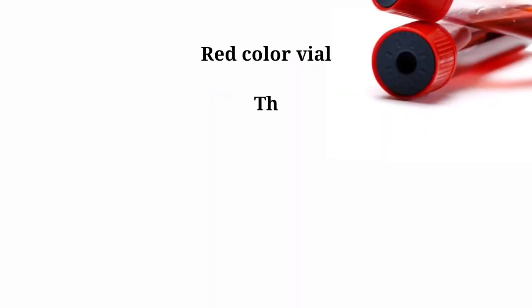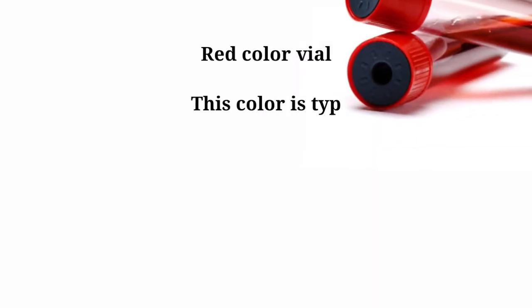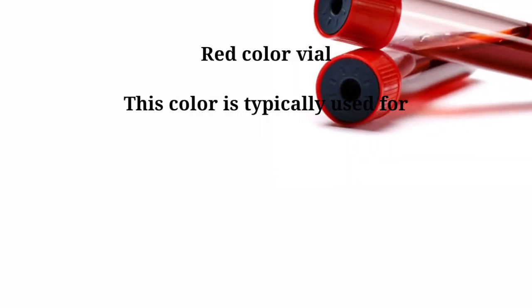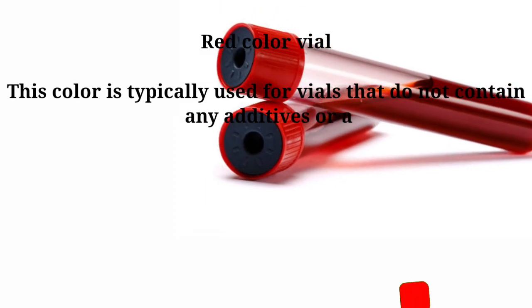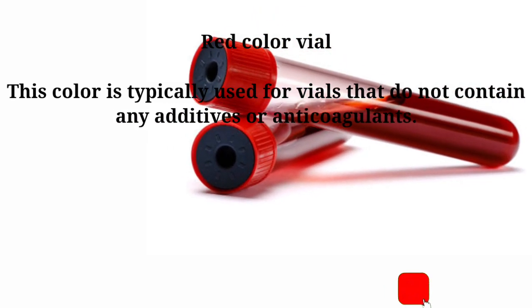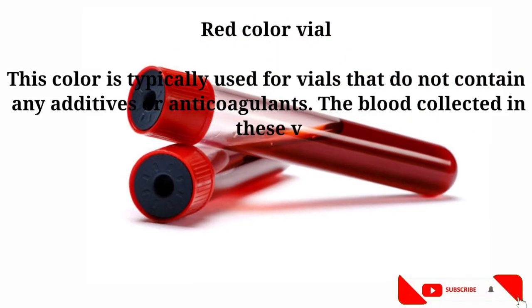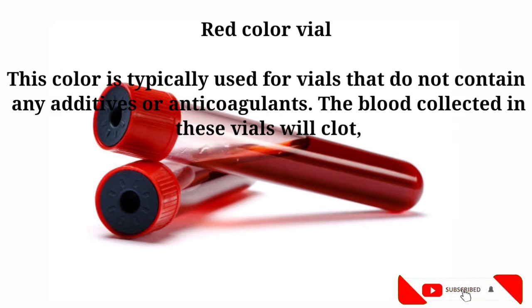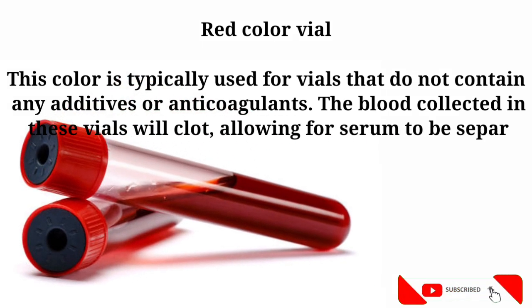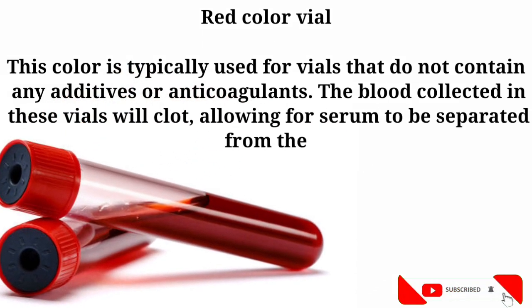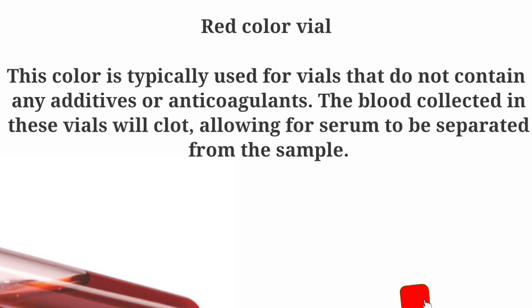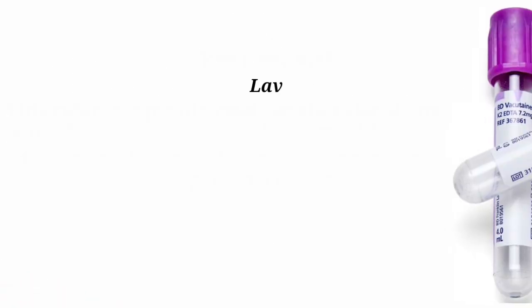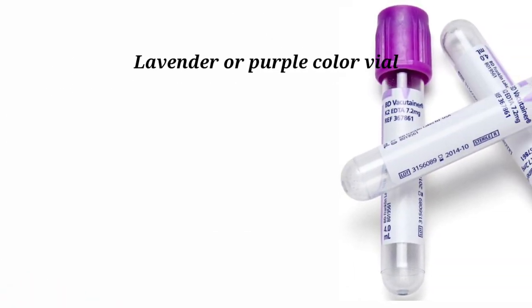Red color vial: this color is typically used for vials that do not contain any additives or anticoagulants. The blood collected in these vials will clot, allowing for serum to be separated from the sample.